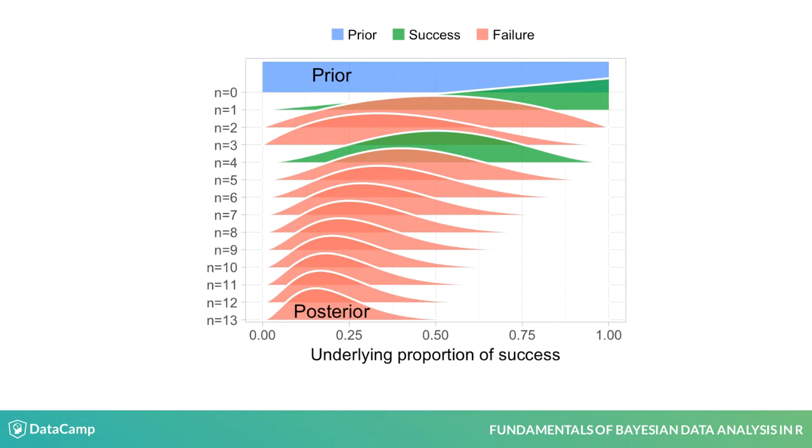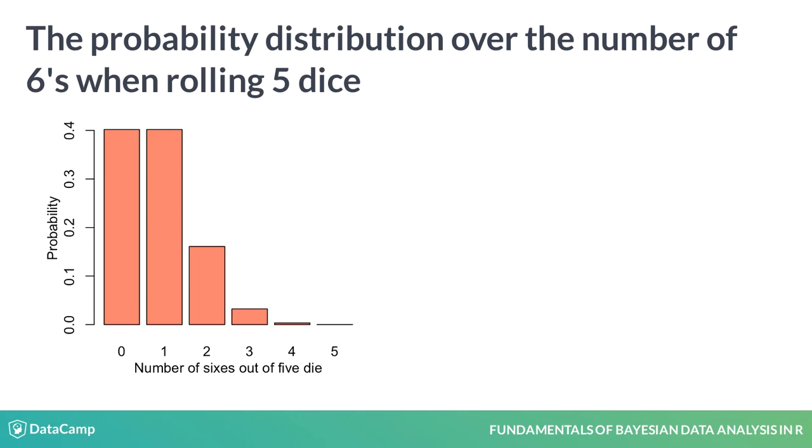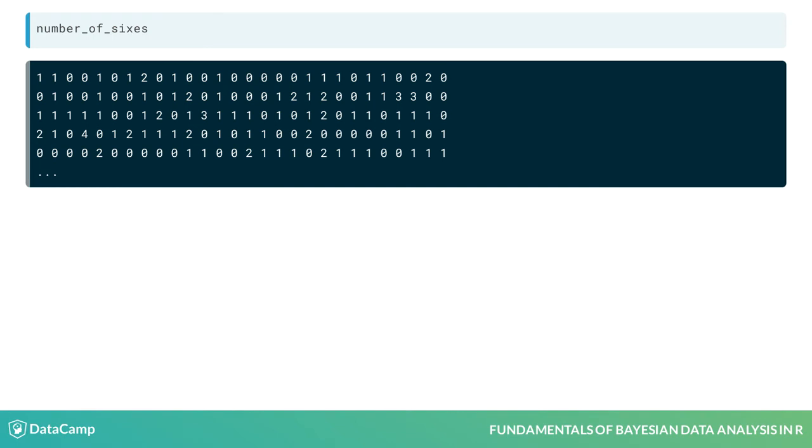What do I mean by this? Well, take for example the probability distribution of the number of sixes you would get when rolling five dice. You can represent that distribution as a plot or as a mathematical function if that's your thing. But you can also represent it as a long vector of samples where a value occurs proportionally often to how probable it is.